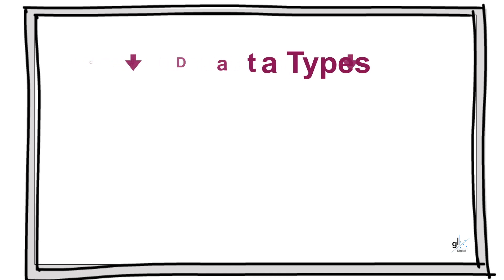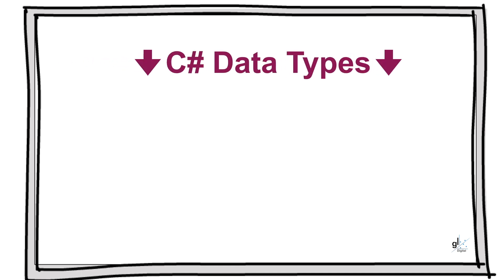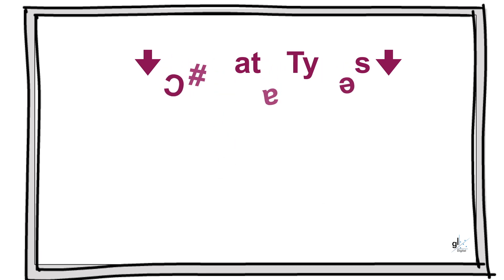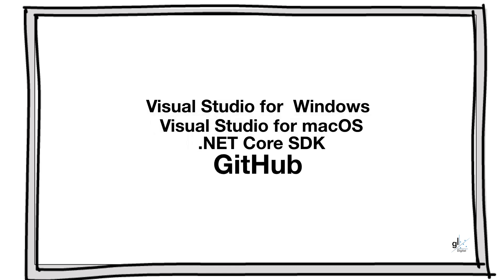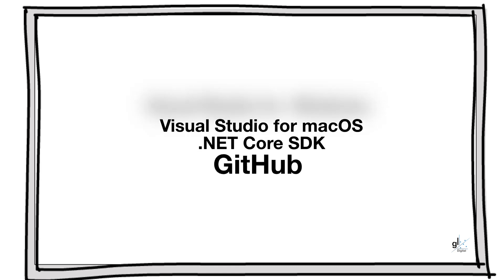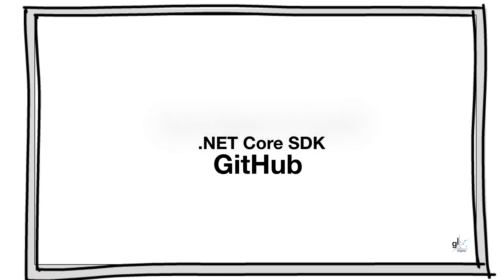Please see in the description below a link to the second part of the C-Sharp for Beginners course, which contains content about C-Sharp data types. Also, please find in the description below information on how you can download and install Visual Studio for Windows or Mac, and the .NET Core SDK free of charge. Details of my GitHub repository are also in the description, where you can download the code created in this tutorial as well as relevant documentation.